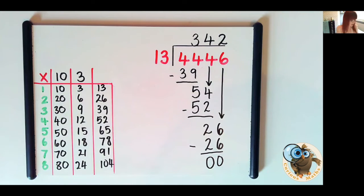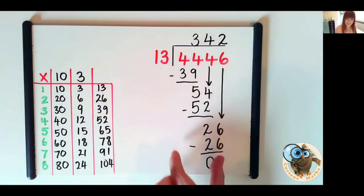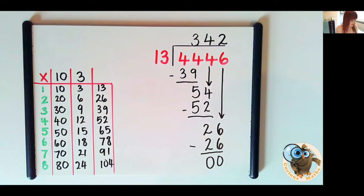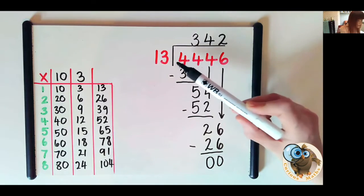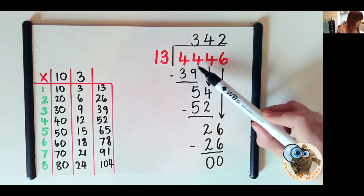So 4,446 divided by 13 is 342. So that is long division. You can see it is long division. It goes right down the page. Now if your child wants to use the inverse to check that they're correct they can do 342 times 13 and they will get the answer of 4,446.